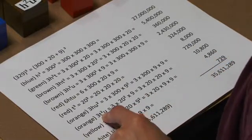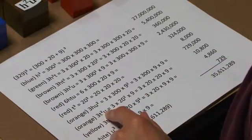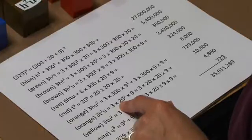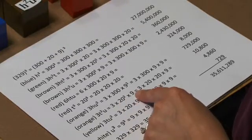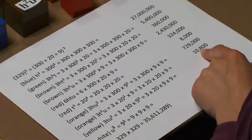Then we have our 10 squared times unit. We have 3 of those. So we have 3 times 20 squared times 9 or 10,800.